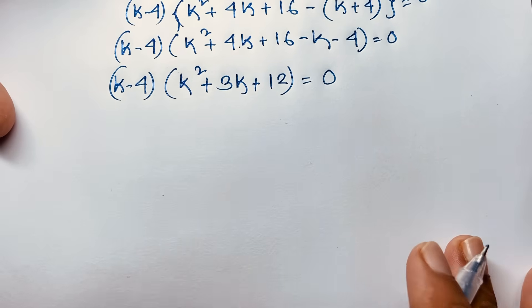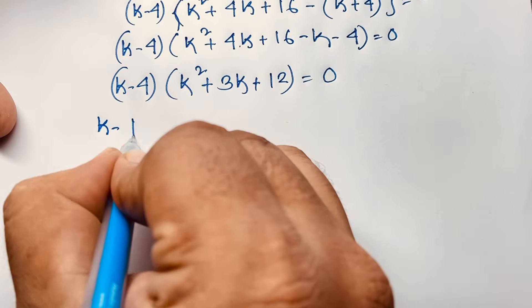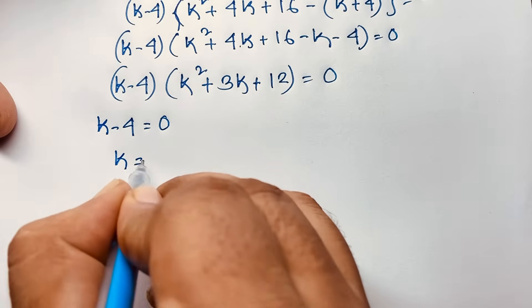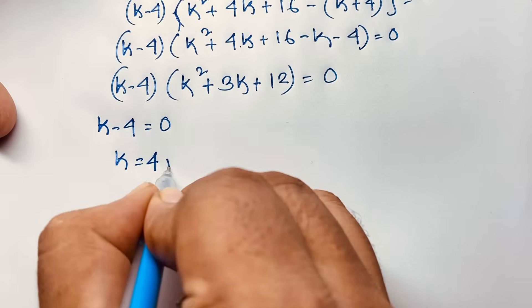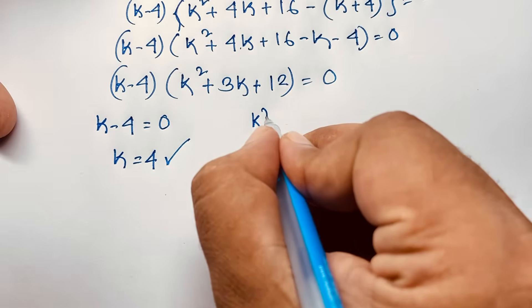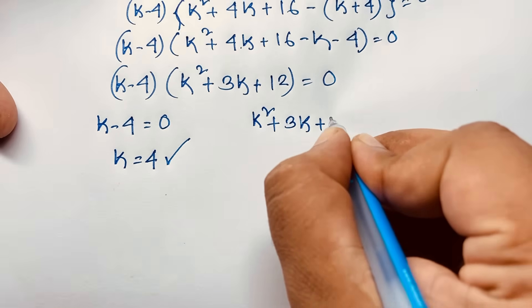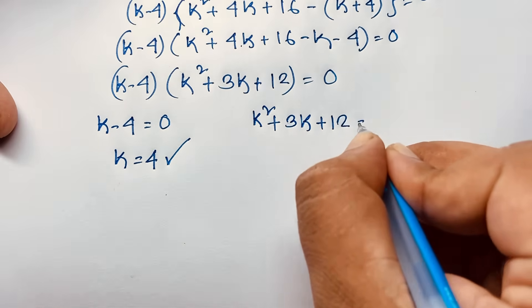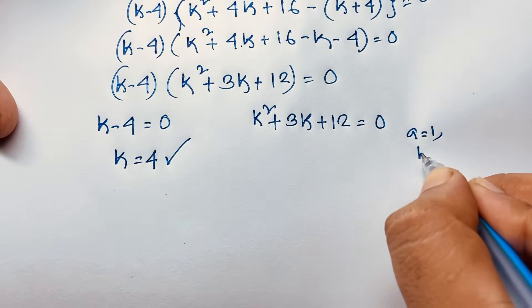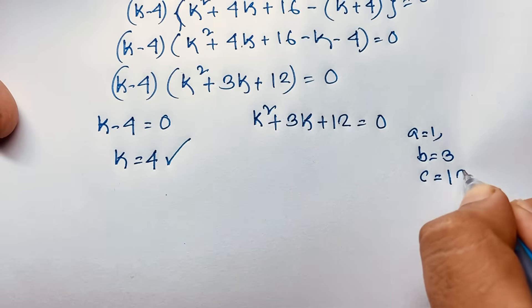We now have two cases. The first case is k minus 4 equals 0, giving k equals 4 as our first solution. In the second case, we solve k squared plus 3k plus 12 equals 0, where a equals 1, b equals 3, and c equals 12.